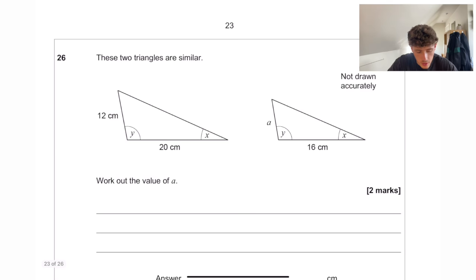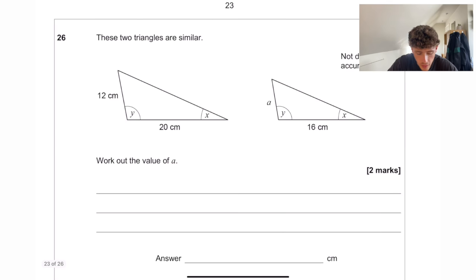These two triangles are similar. Work out the value of A. So straight away with any question like this is we just want to spot the scale factor. So 20 divided by 16 gives a scale factor of 1.25. So A would be 12 divided by 1.25. And that is going to equal 9.6.